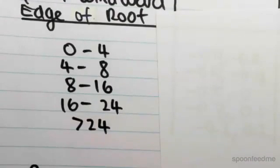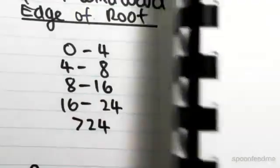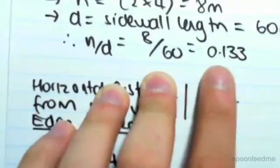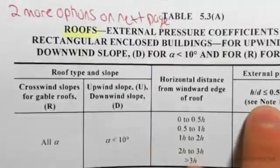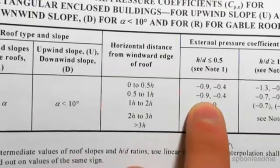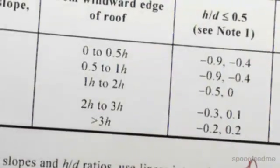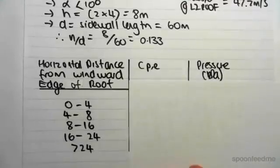I hope that's clear why. So continuing on, we just need to then quote all the Cpe values. For Cpe we need to know the h on d. h on d is 0.133, so that's less than 0.5. So I've literally just quoted all these values over here, I've just rewritten them in my table.